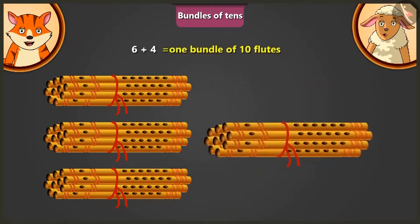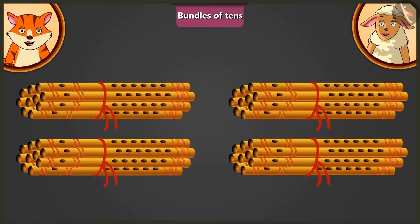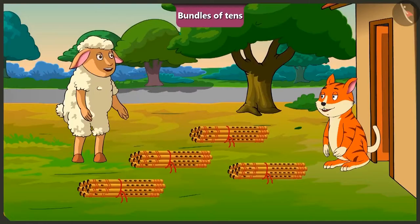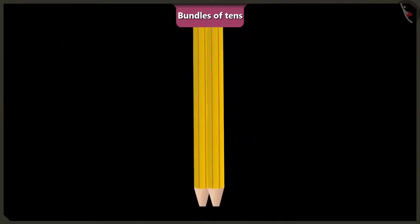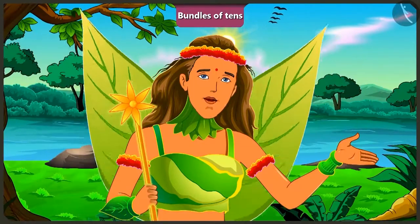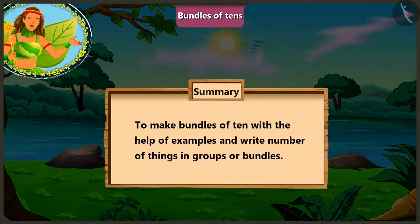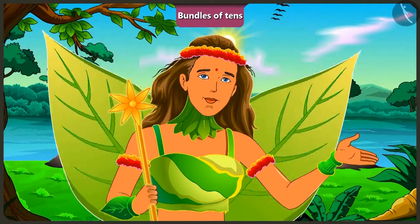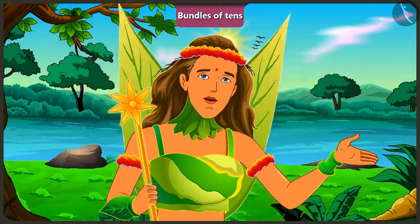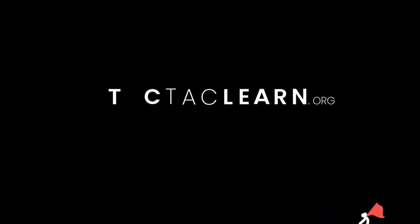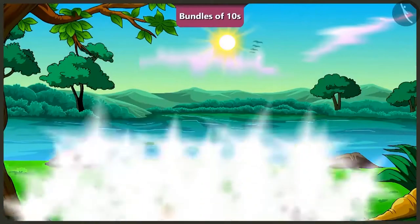Come, Lily, now tell me, adding how many flutes to these six flutes will make one bundle of ten? Yes, now here we have four bundles of ten flutes each. That means there are total forty flutes. Well done, Lily. Okay, now I will leave. See you. Bye. Children, I hope that through these interesting examples, you would have well understood how to make bundles of tens and writing the sum of objects in a bundle or group. In the next video, we will understand the mistakes we make while finding the total number of objects in a bundle of ten.